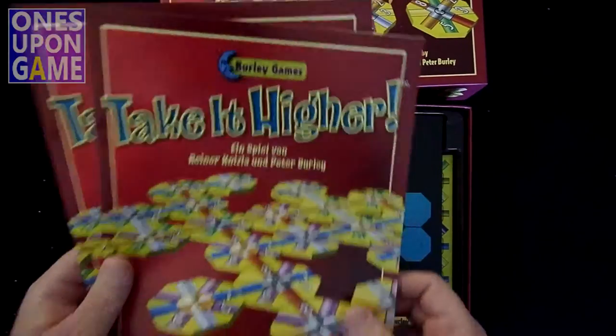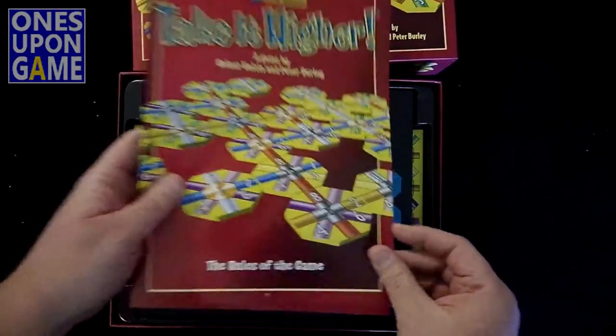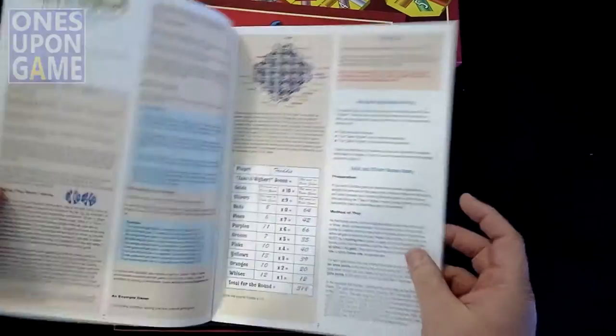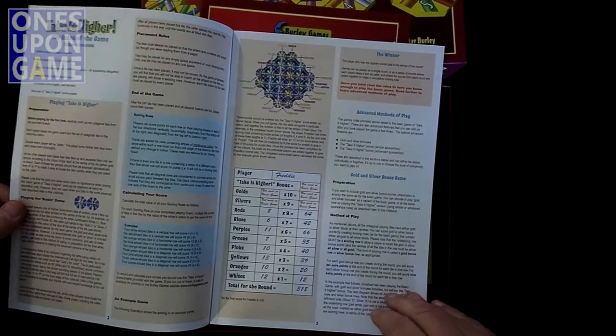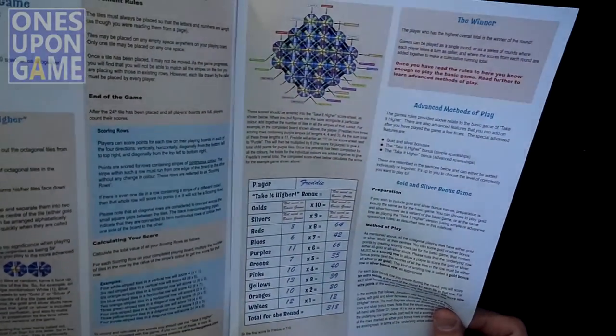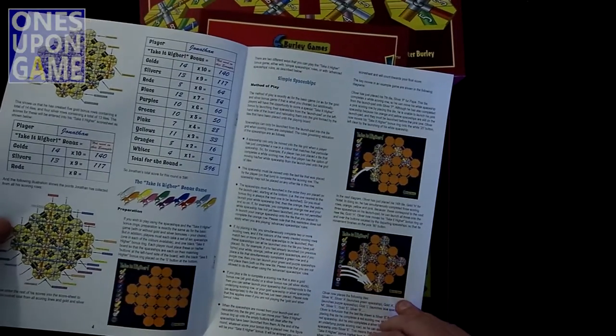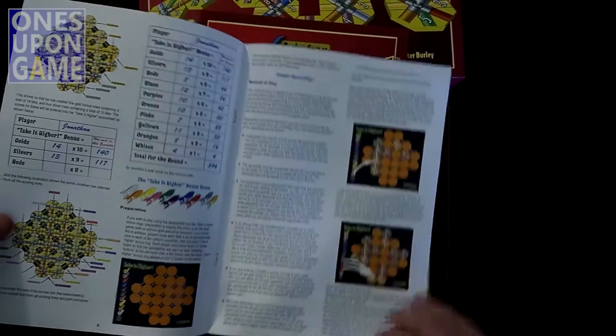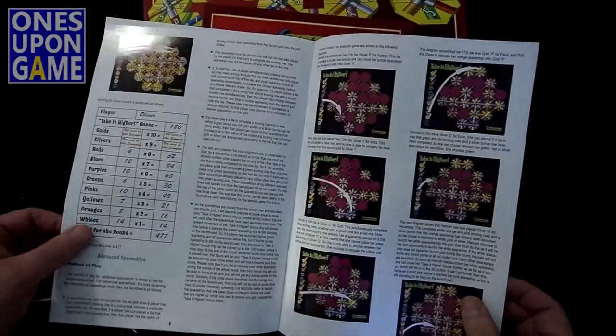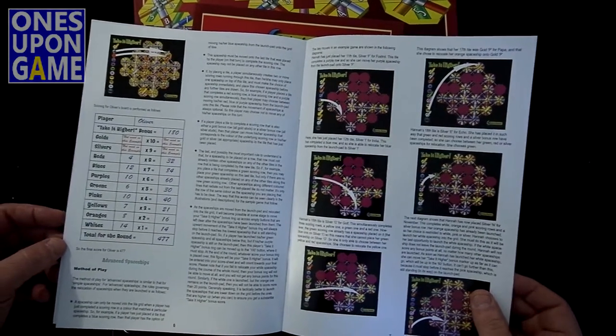We've got the German rules and fortunately the English rules of the game. Very thin booklet, feels like it's maybe eight pages. Full color, preparation, advanced methods of play, simple spaceships, bonus game. Very interesting. So there's your rules on how to play.